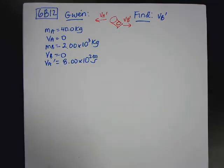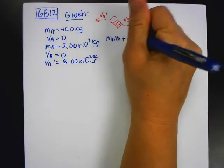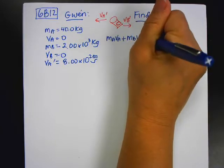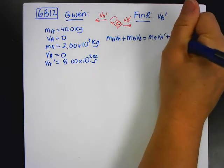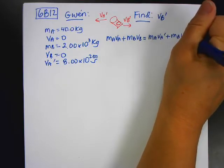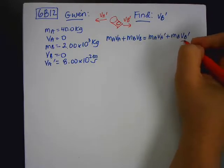So when I write my basic equation, m_A v_A plus m_B v_B is equal to m_A v_A prime plus m_B v_B prime. And I want to solve for v_B prime.